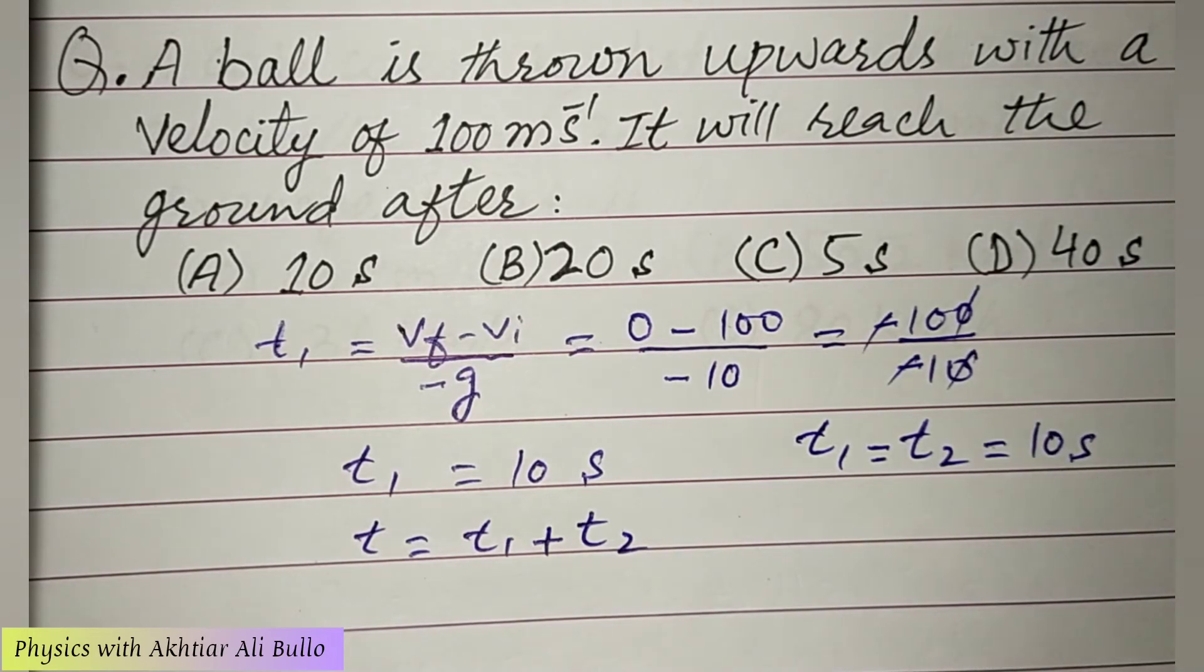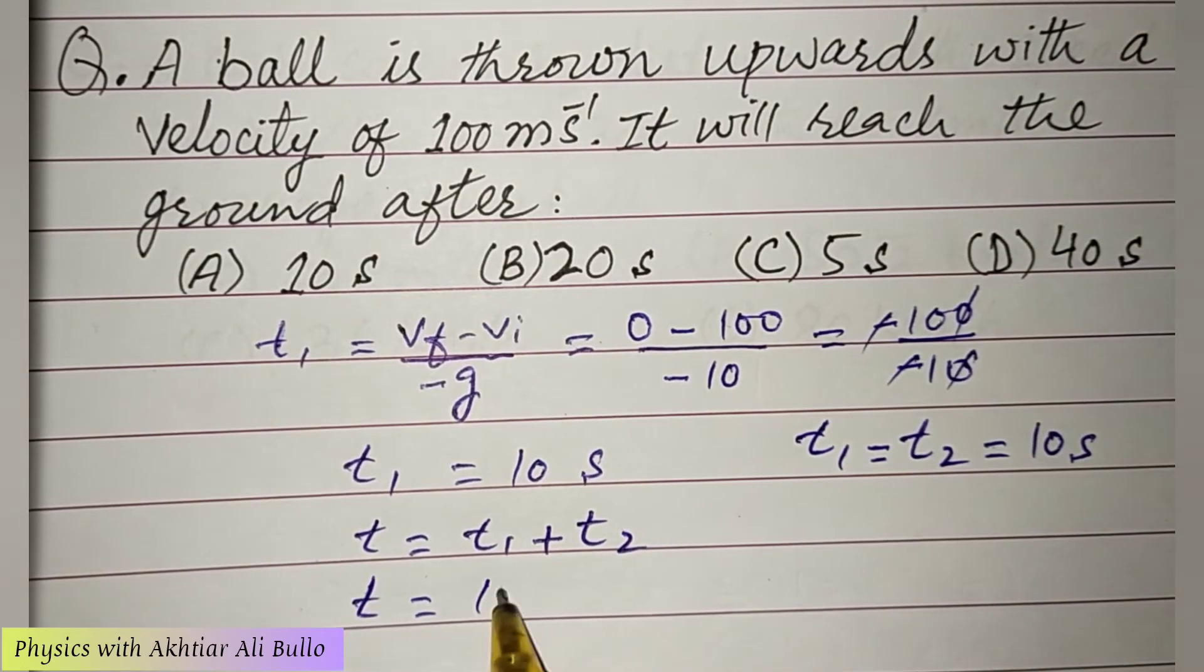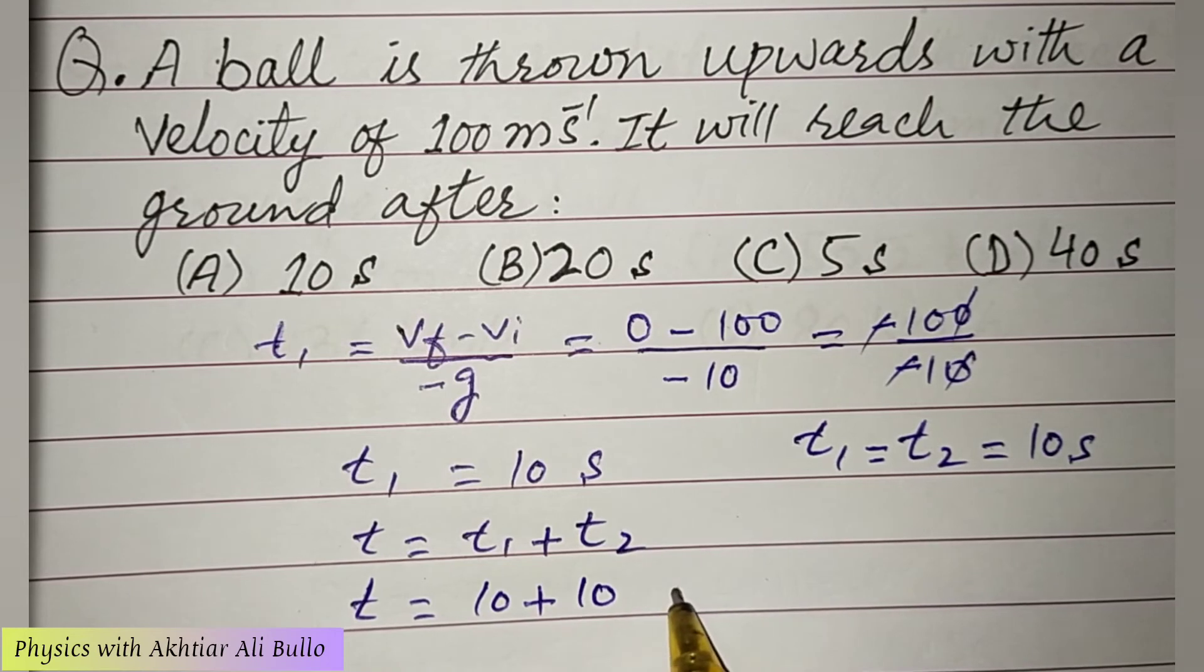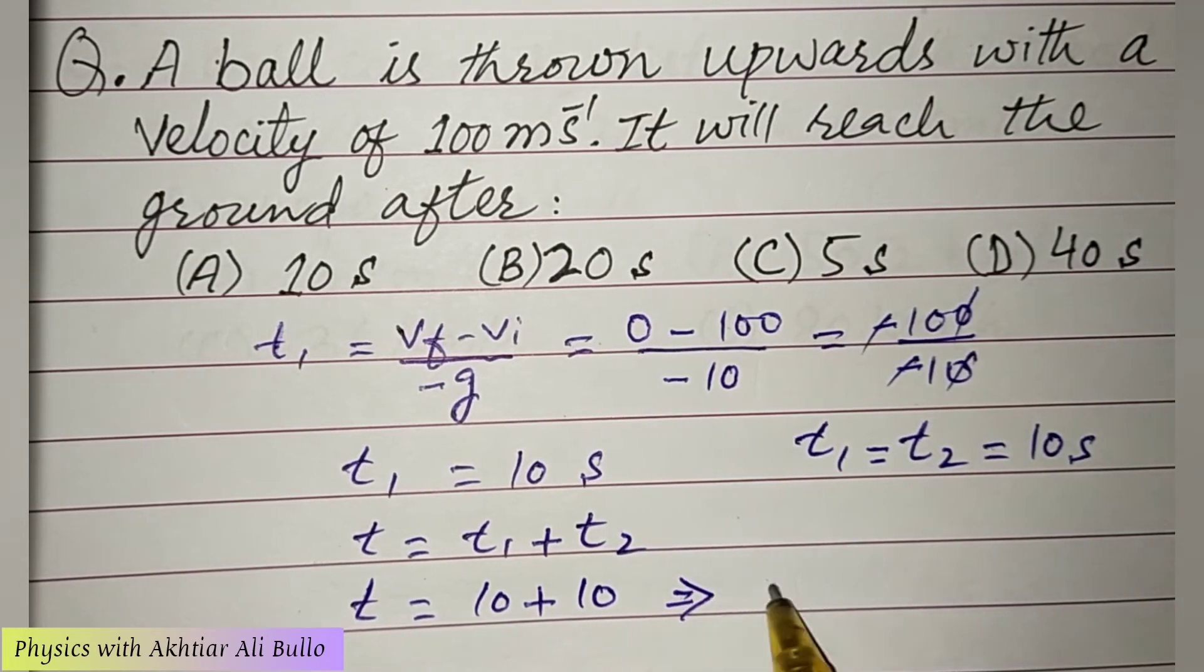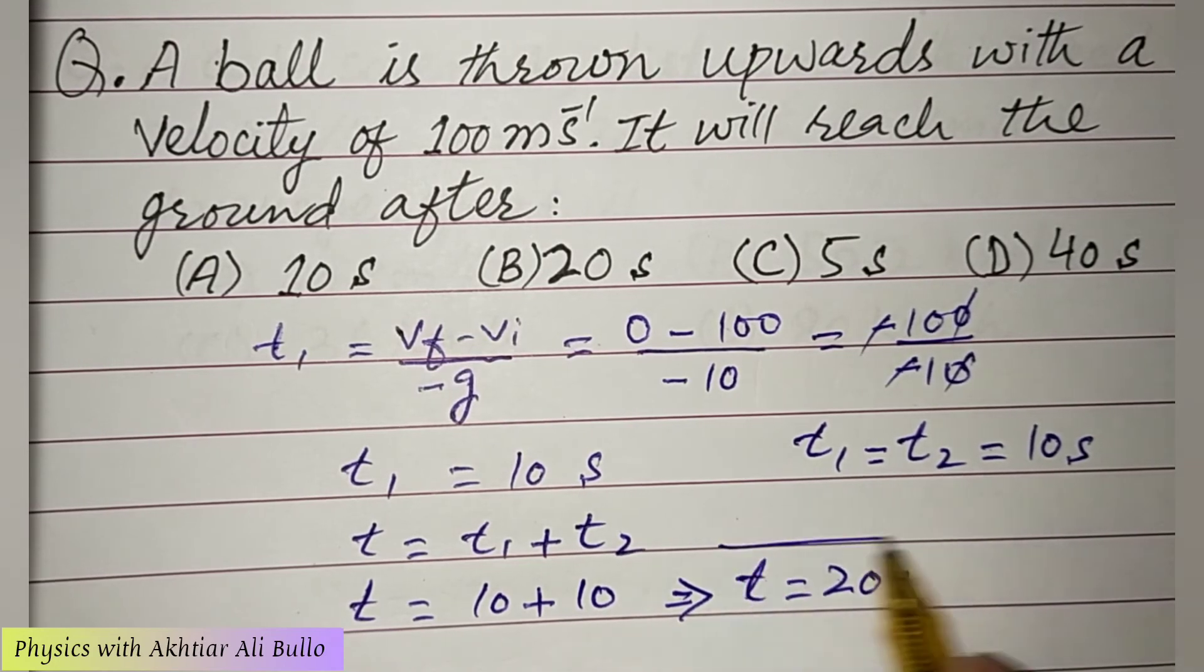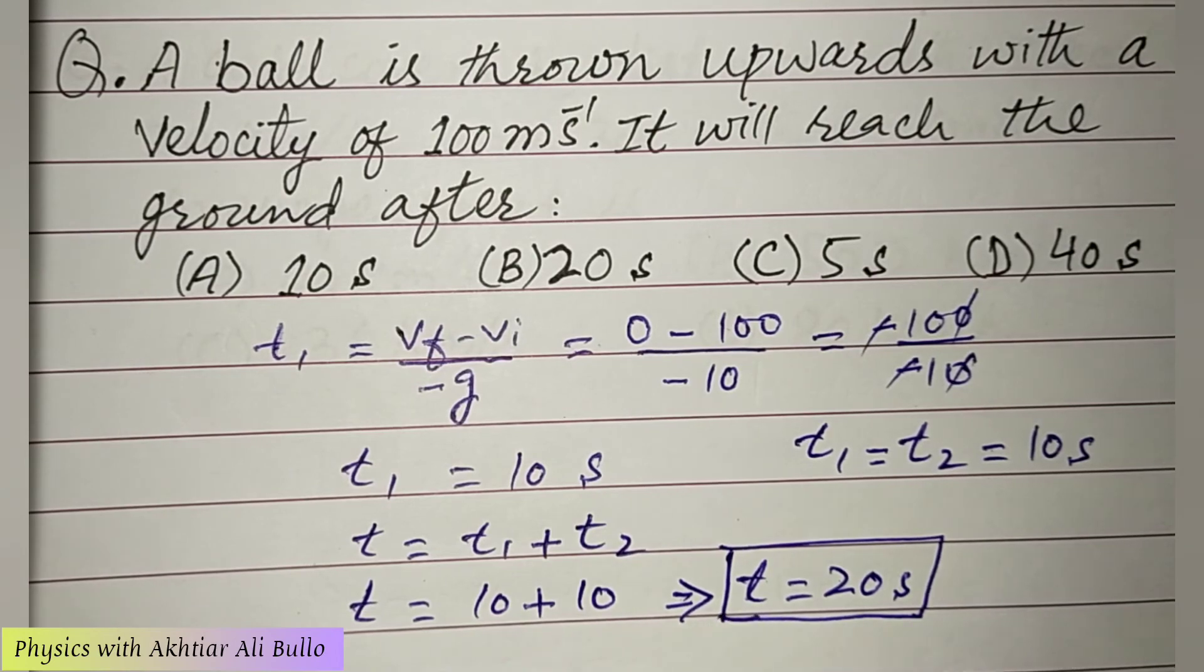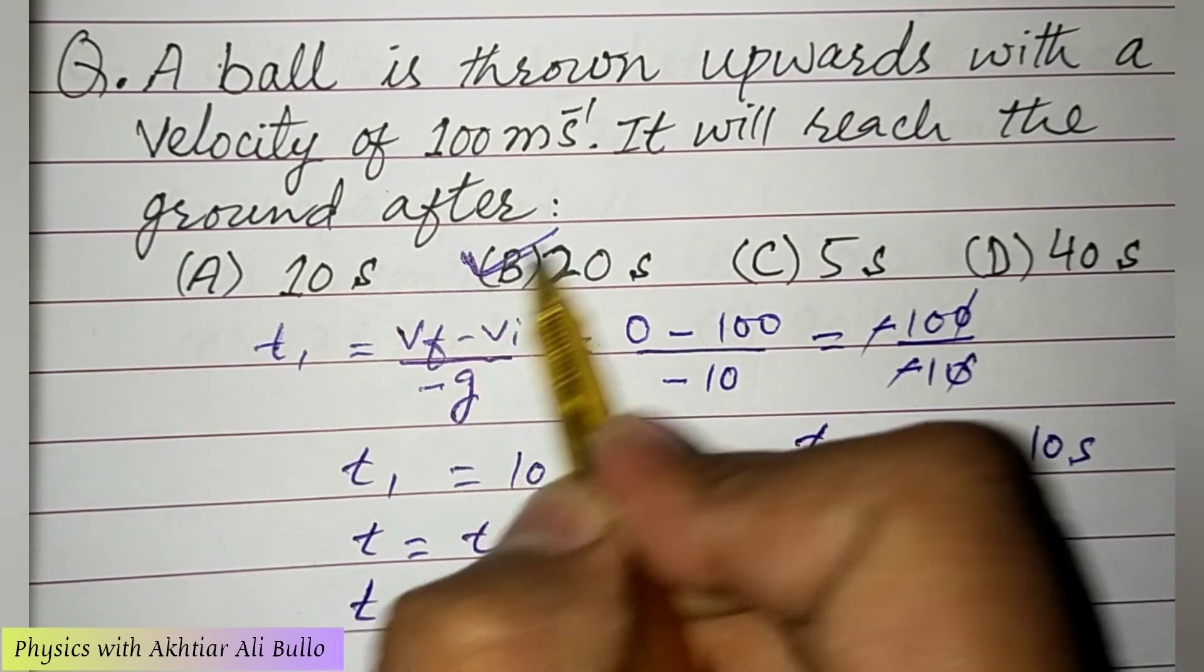Because when ball reaches up to certain height, then it will take time 10 seconds, and when it comes down, it will also take time 10 seconds. So the total time of flight will be 10 plus 10, so it will be 20 seconds. So the total time of flight obtained is 20 seconds. The correct option will be B, 20 seconds.